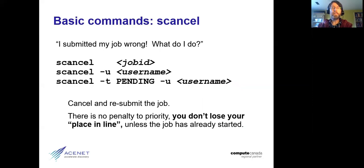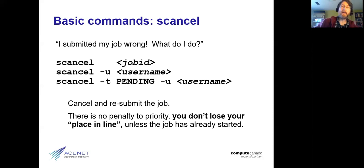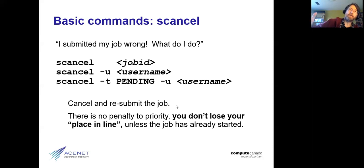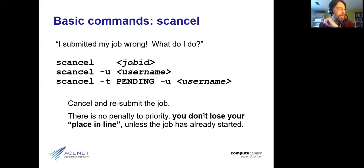Something people occasionally worry about with canceling jobs is losing their place in the queue. Our jobs are not scheduled on a first-come-first-serve basis — it's considerably more complicated than that. The short version is that canceling a job does not lose you your place in line. So the simple thing to do if you've messed something up is cancel it and resubmit with the right parameters. There's also an supdate command, but scancel with the job ID number will do fine.